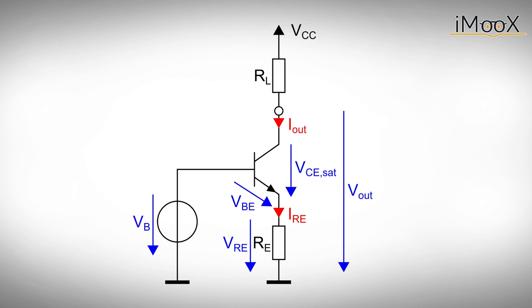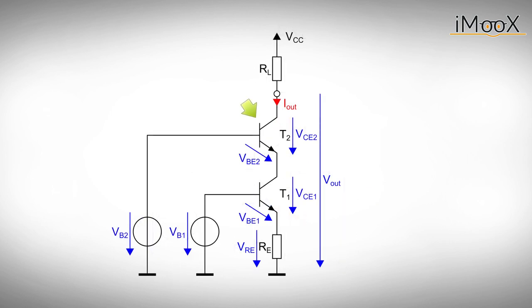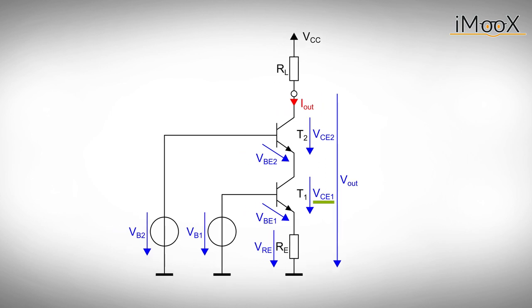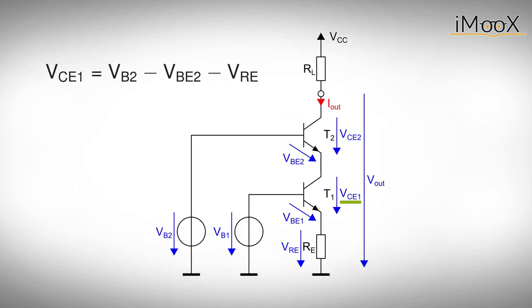To do so, we just add another bipolar transistor to our circuit. Any change in output voltage changes the collector emitter voltage of the second transistor T2. The collector emitter voltage of the current controlling transistor T1 is pinned to VCE1 equals VB2 minus VBE2 minus VRE.